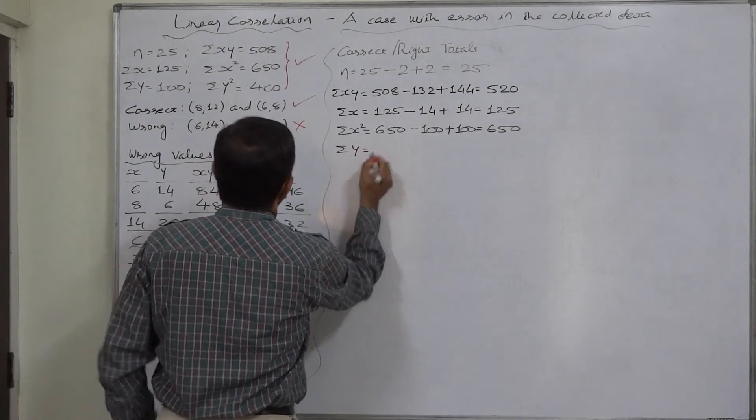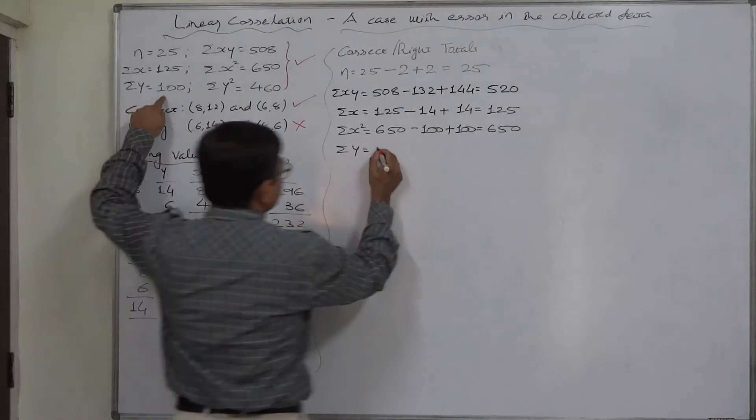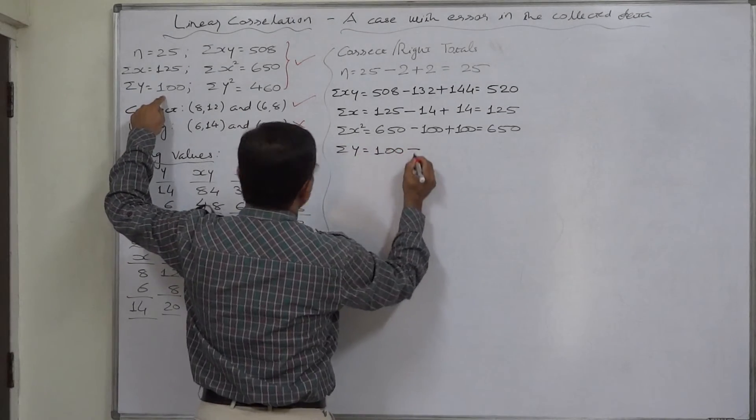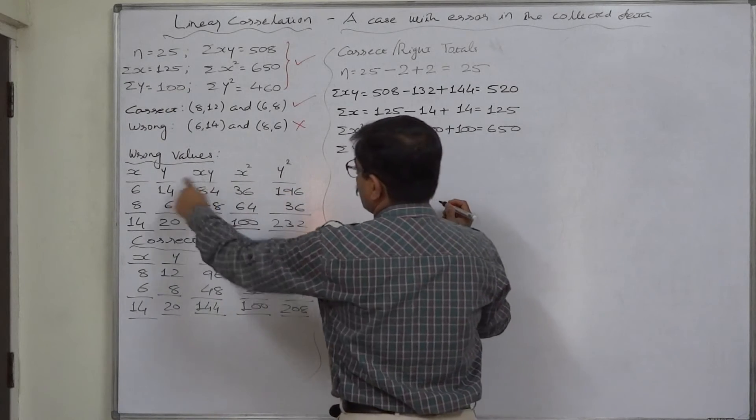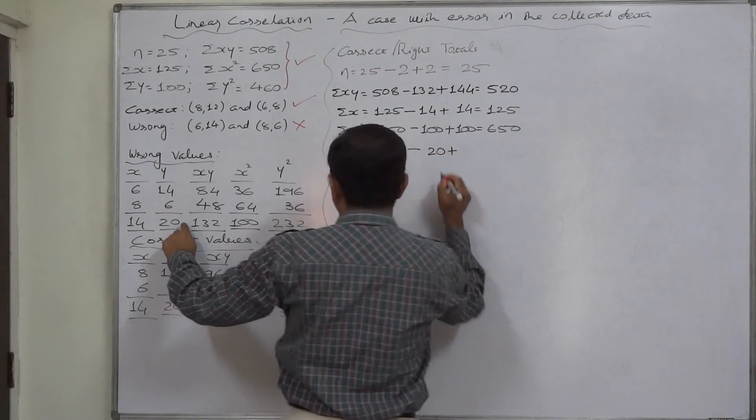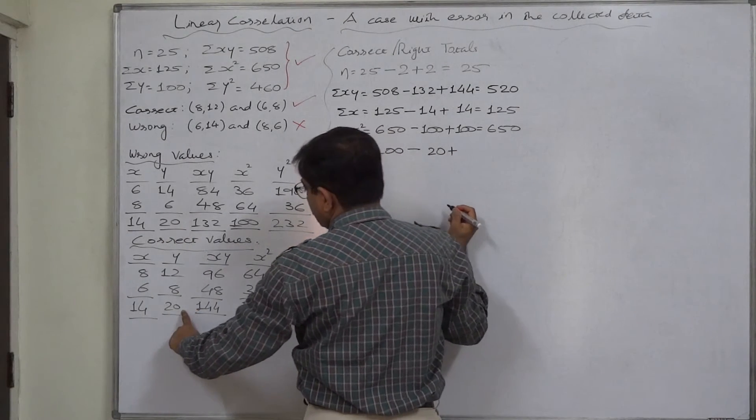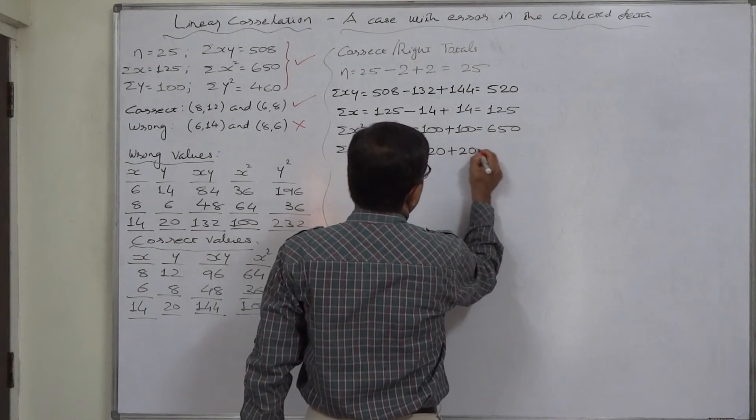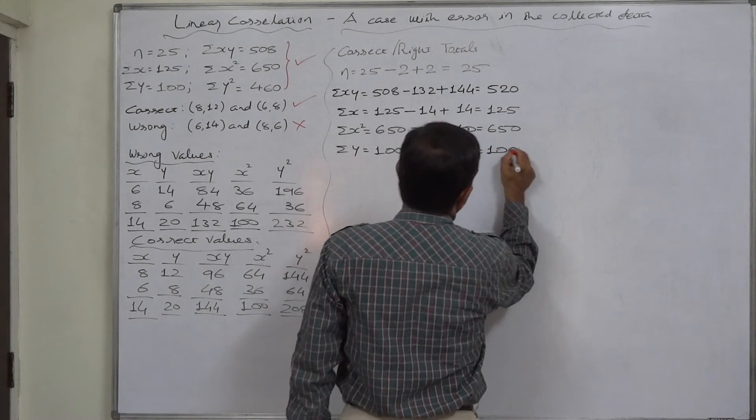Σy, given to be 100, we have to remove the effect of wrong values of y, 20. And we have to add the effect of correct values of y, that is also 20. So it remains 100.